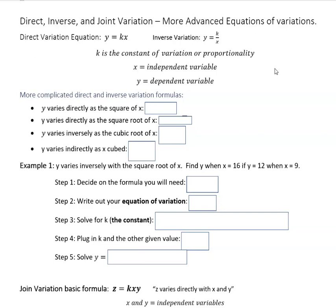Which makes y the dependent variable. We're looking at more complicated formulas like y varies directly as the square of x. So instead of just kx, if it's the square of x, then we need to say kx squared.